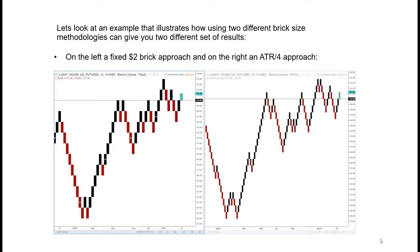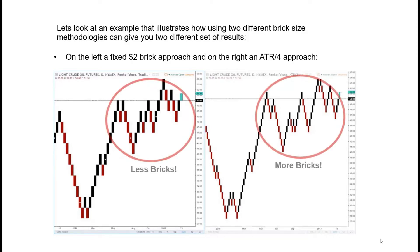Here are two examples: on the left a two-dollar fixed approach, on the right an ATR divided by four approach on the same crude oil asset — giving us very different possible entries and exits. There are more bricks on the right version than the left, and that can either slow or speed up your trade entry or exit. We're left with two issues to address: time, and the brick size.